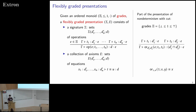In the non-determinism example, we take a bunch of grades including bottom, and have operations including or-operations with appropriate grades. The axioms include the equation saying: if X has grade bottom (this subscript here), meaning X definitely cuts, then or of X and Y is the same as just doing X.